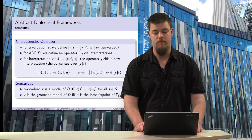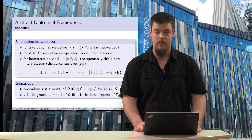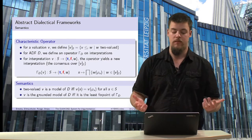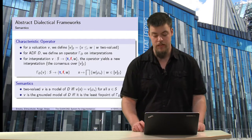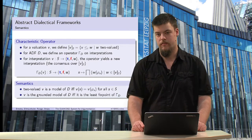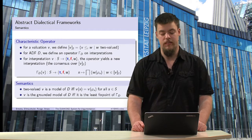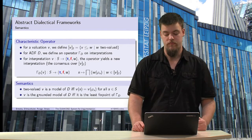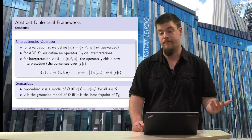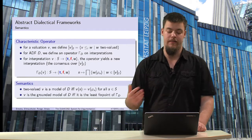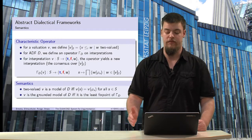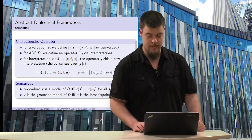Based on this characteristic operator, we can define some semantics. One semantic is the grounded model of D, where the grounded model is the least fixed point of the characteristic operator gamma_D. Another semantic is the two-valued model: a model is a two-valued model if and only if it is two-valued and the value of a statement equals the value of the acceptance condition of the associated statement.